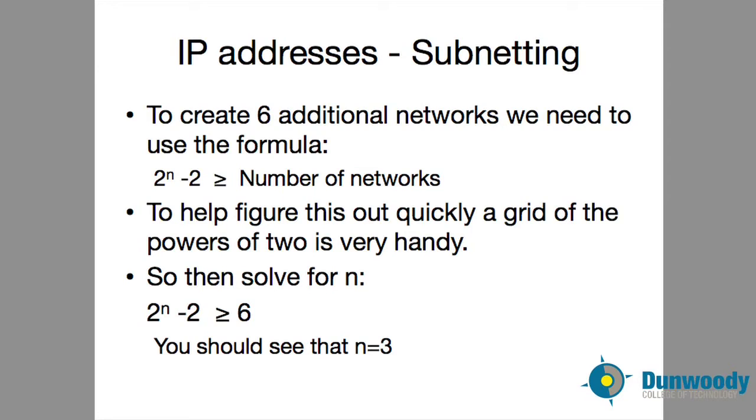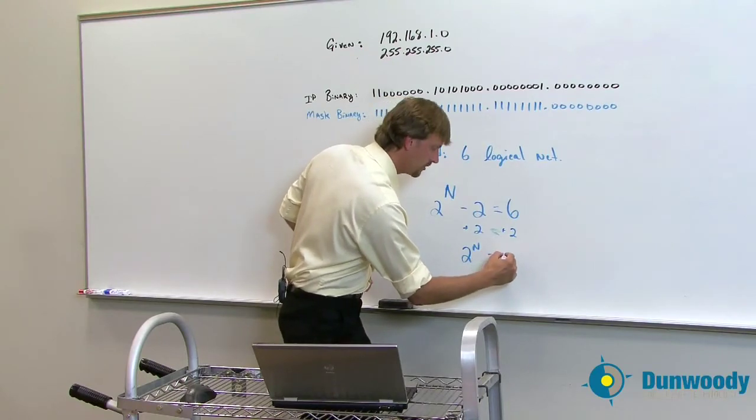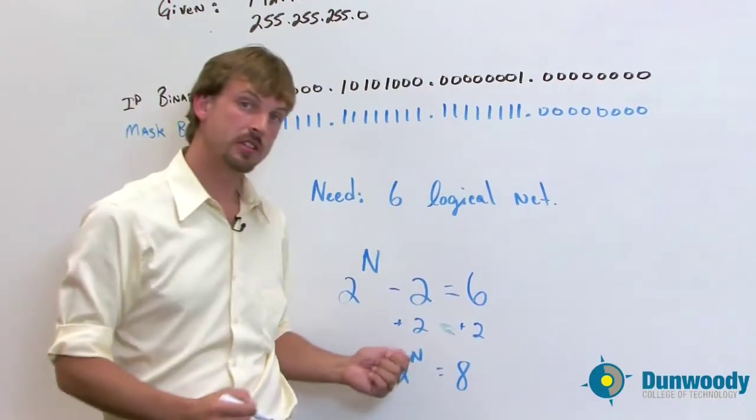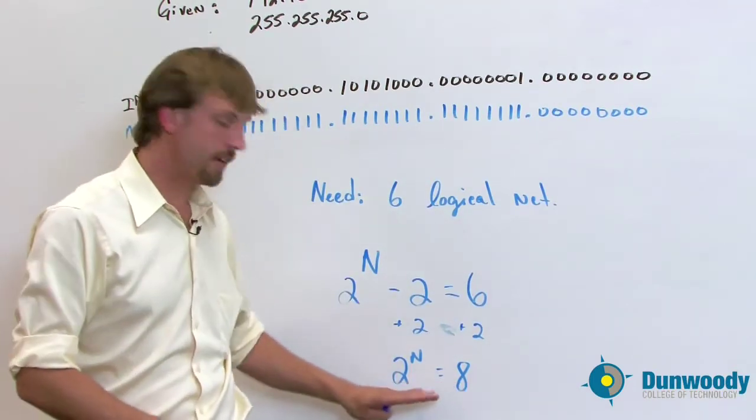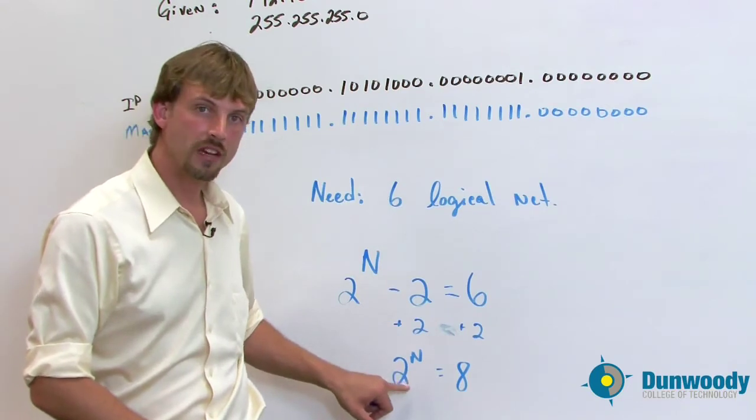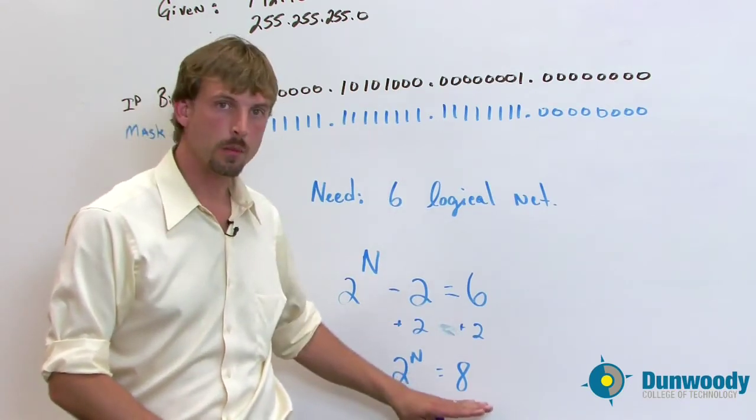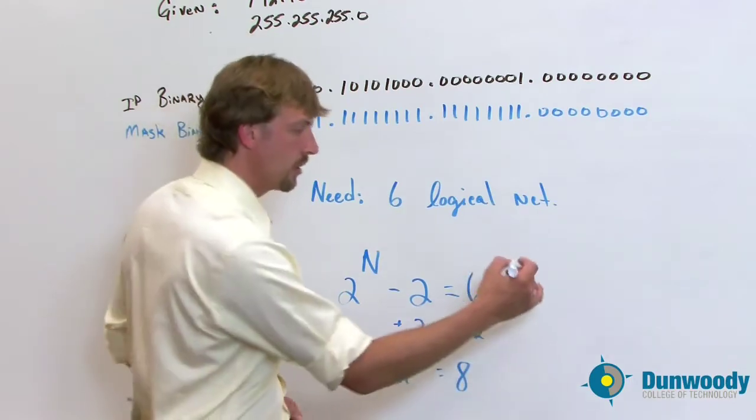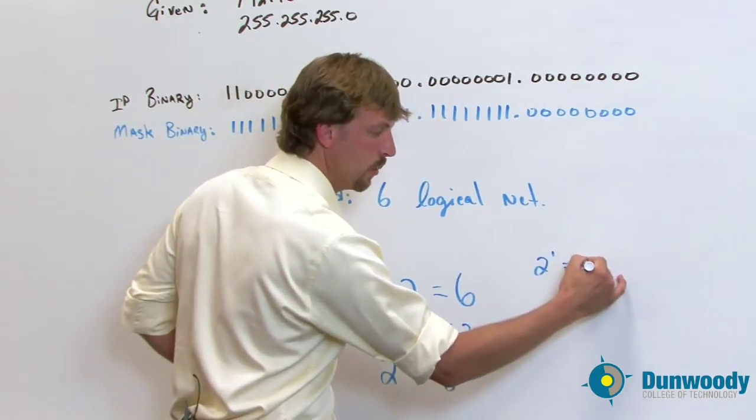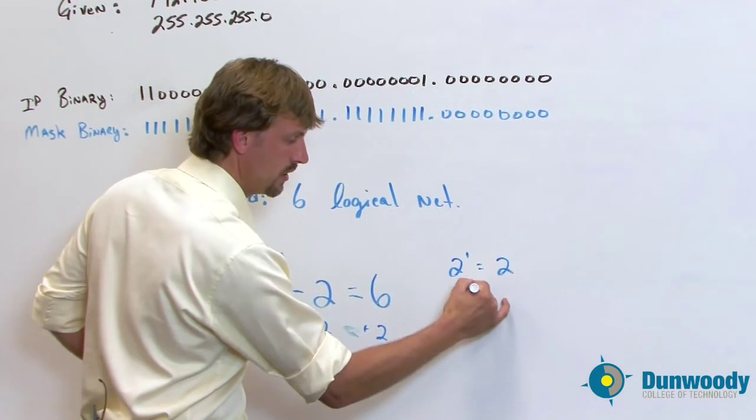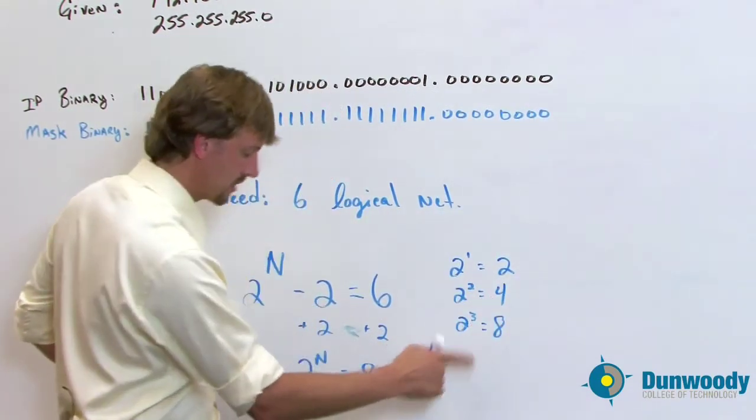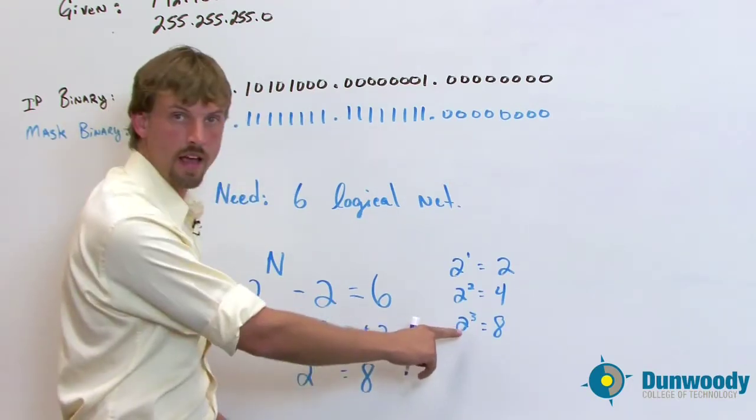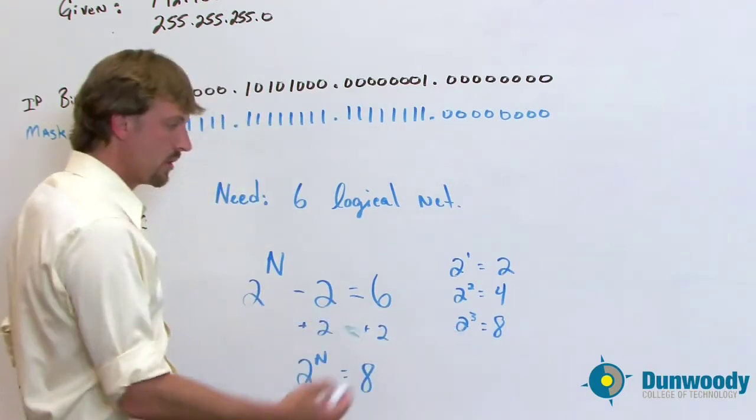And see that what I really need is some power of two that is equal to eight in this particular instance. In some of the subnetting problems, you'll see it doesn't come out nicely. You need to figure out something of a power of two that is greater than this number here. But this is going to work out great. If we take a look real quickly at a grid, two to the one is two, two to the two is four. You start to see right here at two to the three that that solves this equation here. N value is three.